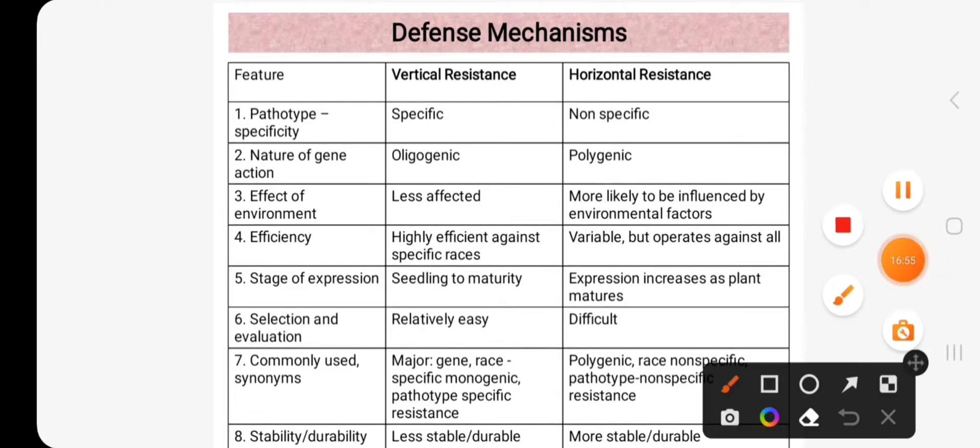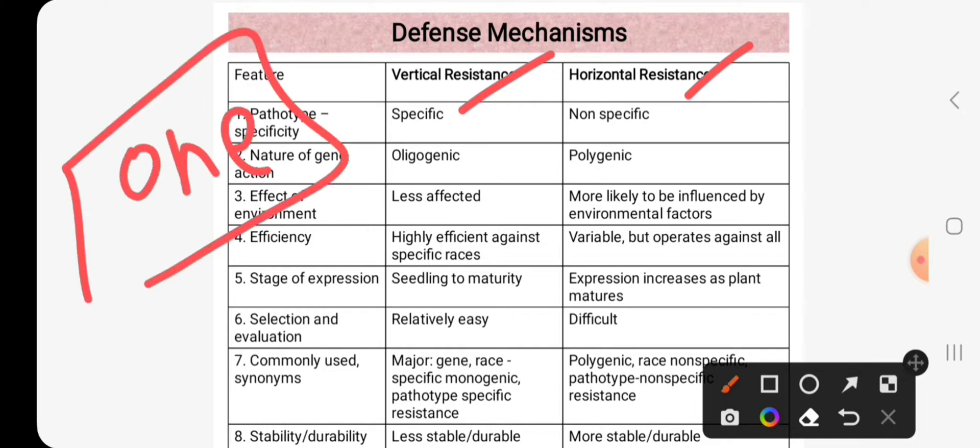Now the difference mechanism or resistance may be vertical and horizontal. Actually, vertical resistance is caused by one or few genes, while horizontal resistance is due to many genes.